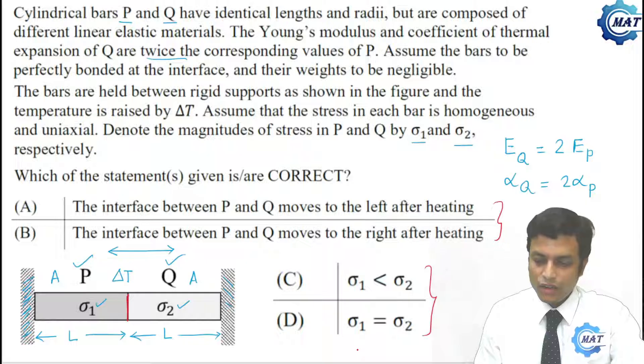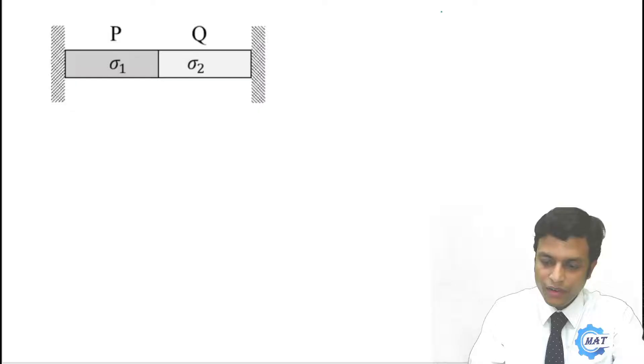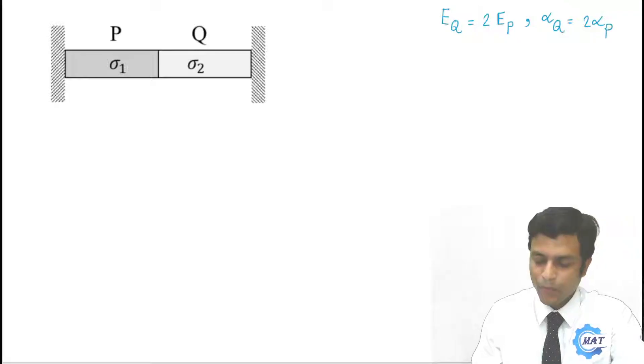Another aspect is stress of P and Q. Two options are given: sigma1 is less than sigma2 or sigma1 equal to sigma2. First, let us come to the figure. Given parameter is that EQ is twice of EP, and alphaQ is also twice of alphaP. Now temperature is raised by delta T, but these two are rigid supports.